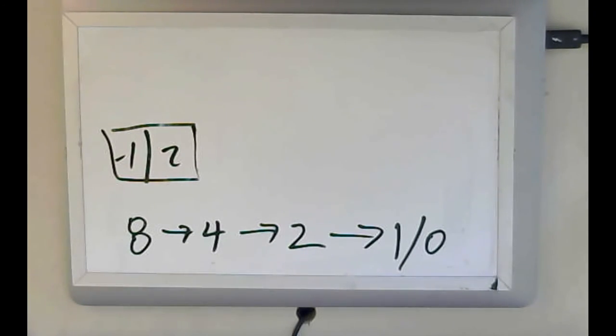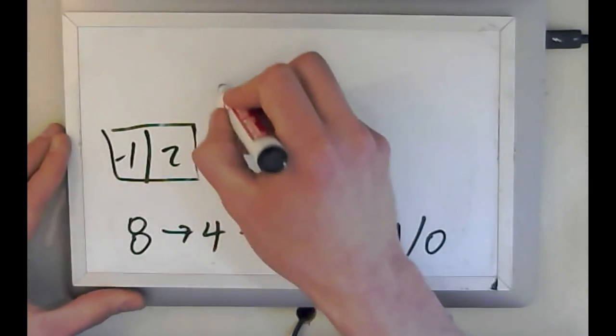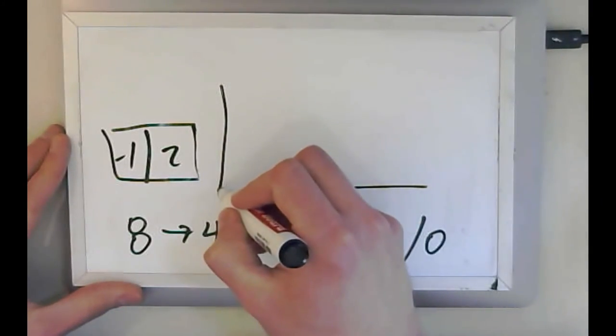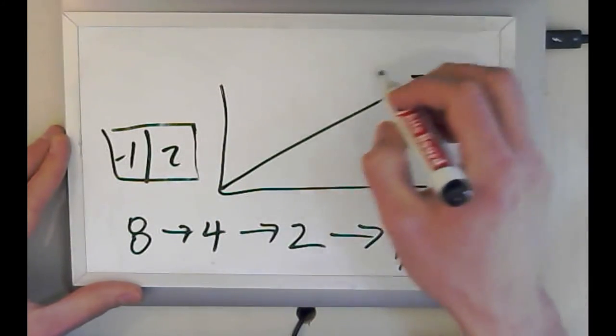And so this is why binary search is O log n because every time I look at a value, I divide the problem in half. And that turns out to grow much, much, much slower than O n.